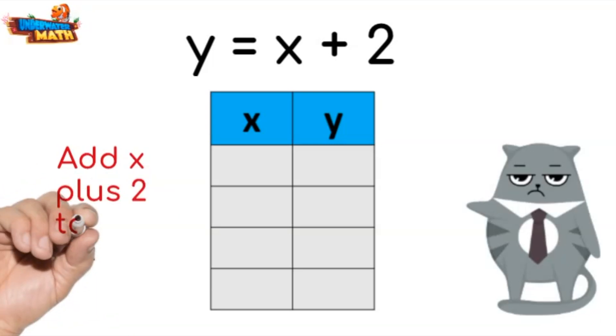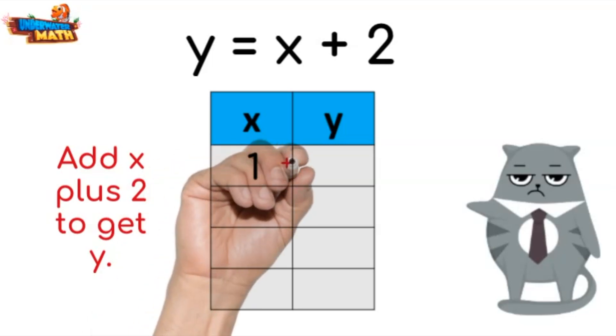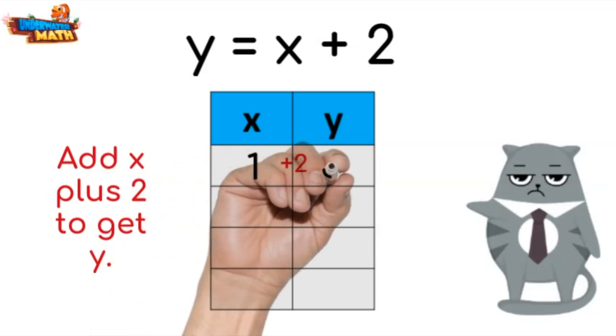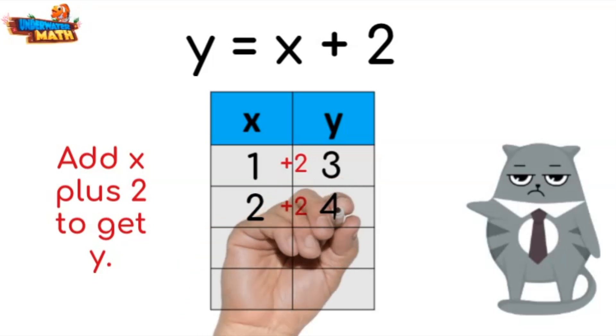Can you show me? Sure, if we have one in the x column we add two to get the value of the y column, three. Oh, so if I had two in the x column I would add two to get a four in the y column. Good job grumpy kitty, let's finish the table.